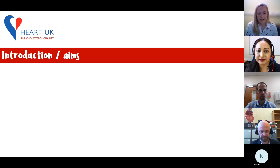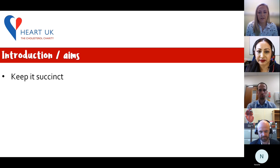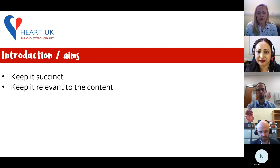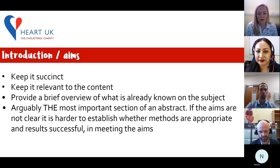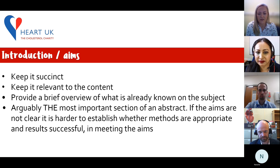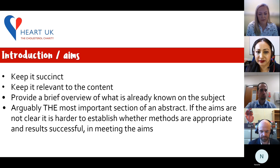For the introduction and aims, it's really important to keep it succinct and relevant to the content. Here you should provide a brief overview of what is already known on the subject. This is arguably the most important section of the abstract. If the aims are not clear, it's harder to establish whether methods are appropriate and if your results are successful in meeting your aims.